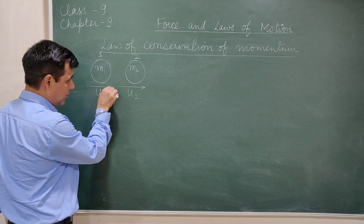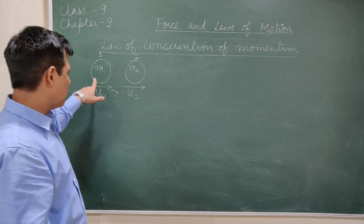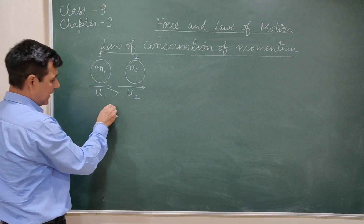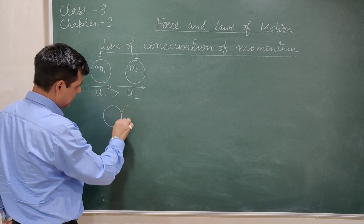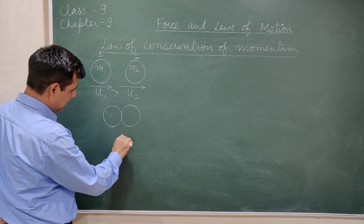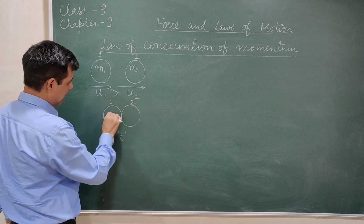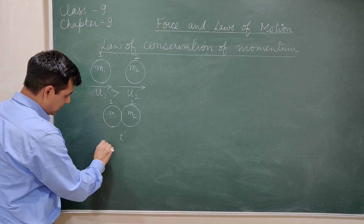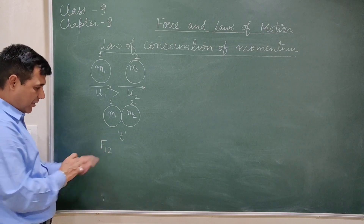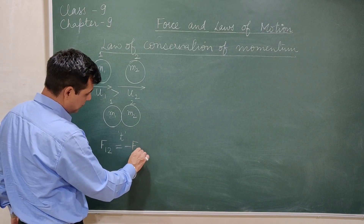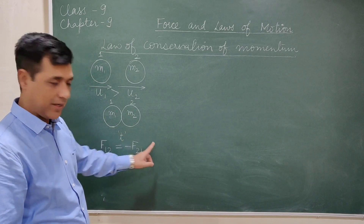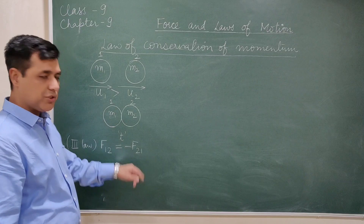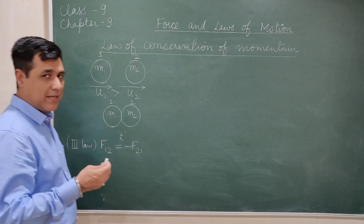The condition is U1 is greater than U2. Because when U1 is greater than U2, the first object will eventually hit the second object, so there will be a collision between them. This collision lasts for time t. Mass remains constant. During the collision, the first object applies a force — the action — on the second, which is F12, equal and opposite to the force applied by the second on the first, F21. This is according to the third law: F12 is equal to minus F21.